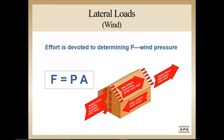The most common lateral load is wind. The force F in the equation is distributed onto the building through both positive and negative pressures as the wind travels around the building surface. These pressures P are integrated over the entire area A that is resisting the wind pressure on the building.